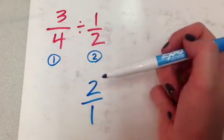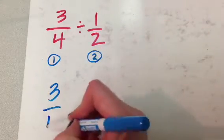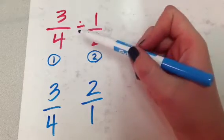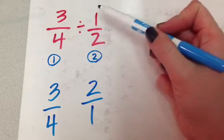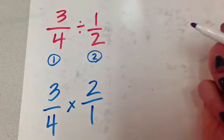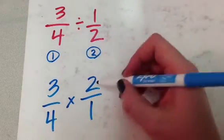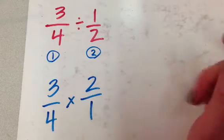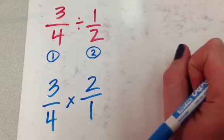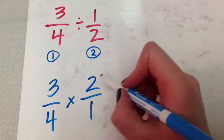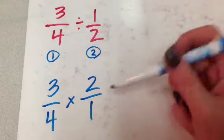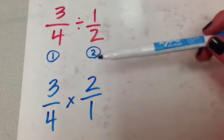This first fraction I'm going to write exactly the same — keep it exactly the same. And then, once I've flipped the second one, I'm going to change our division sign to a multiplication sign, and then we can solve this problem exactly like we've been solving multiplication problems in class. Pretty cool. So that means I can cross-cancel, I can do anything, just like solving a regular multiplying fractions problem.